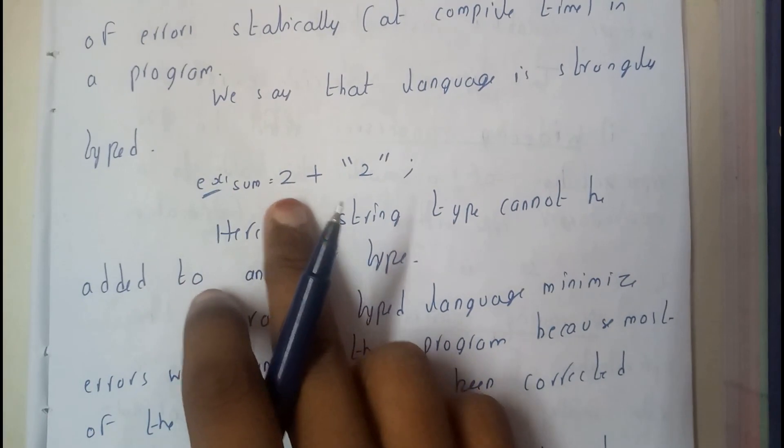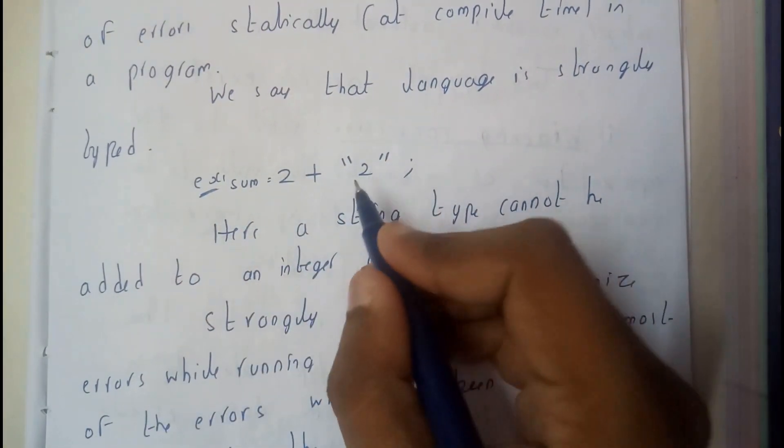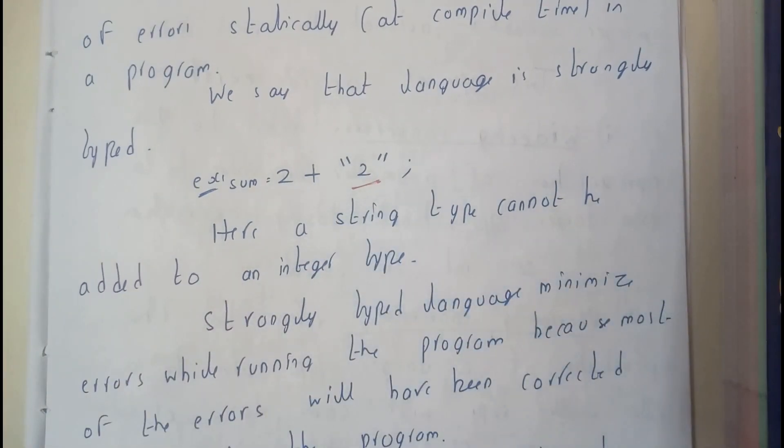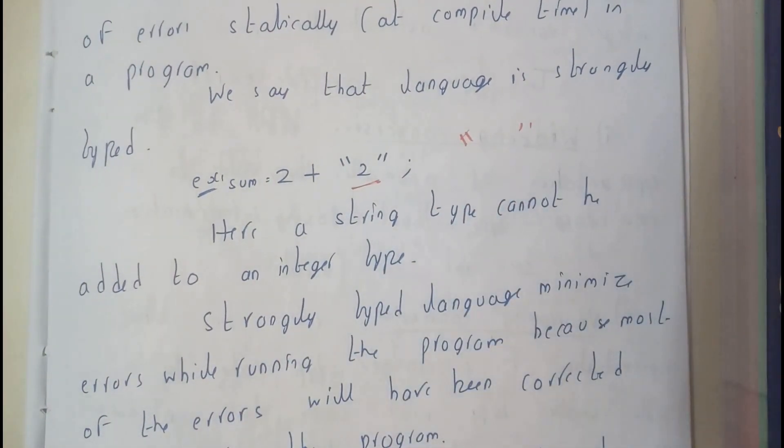Let us assume that sum is equal to 2 plus, inside inverted commas, we wrote "2". So indirectly this 2 becomes a string. Whenever you are using inverted commas in most languages...